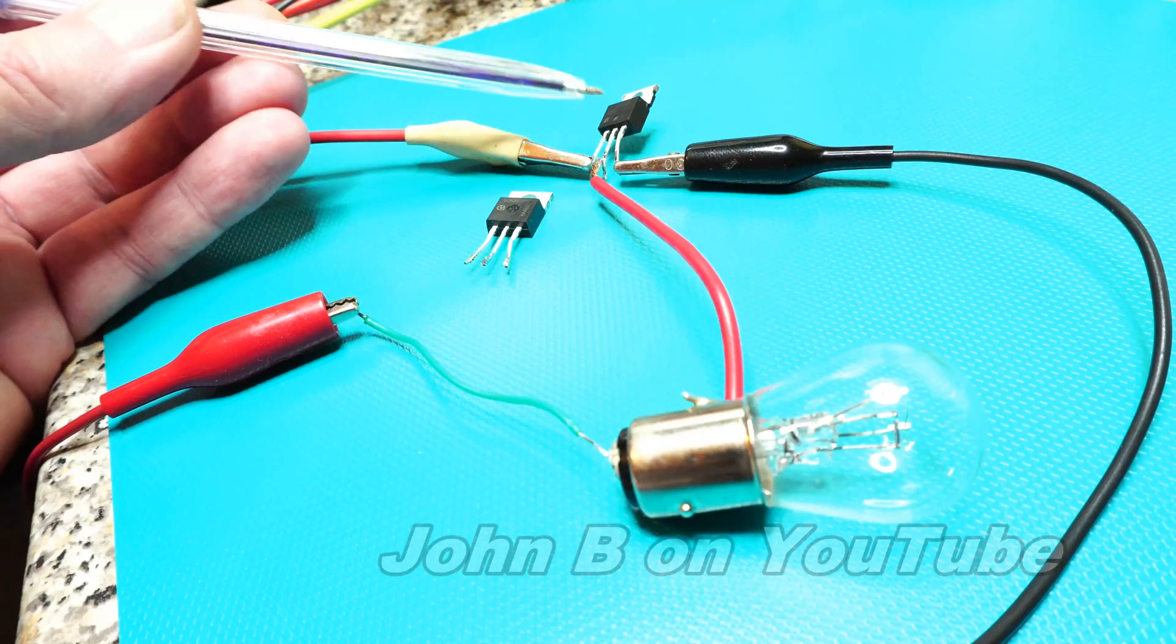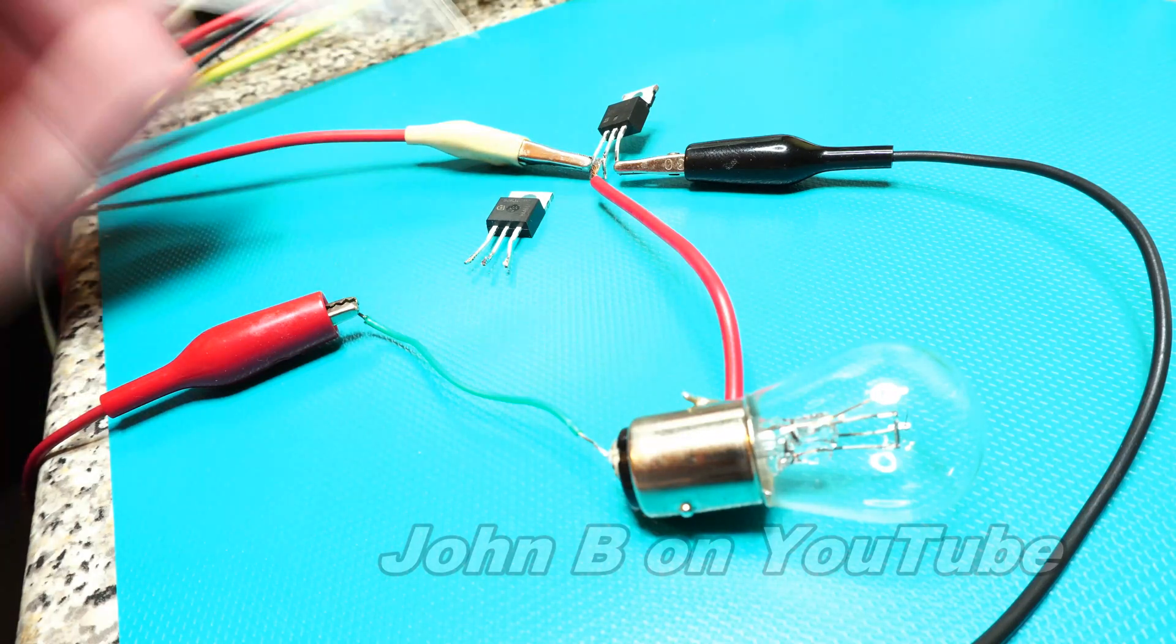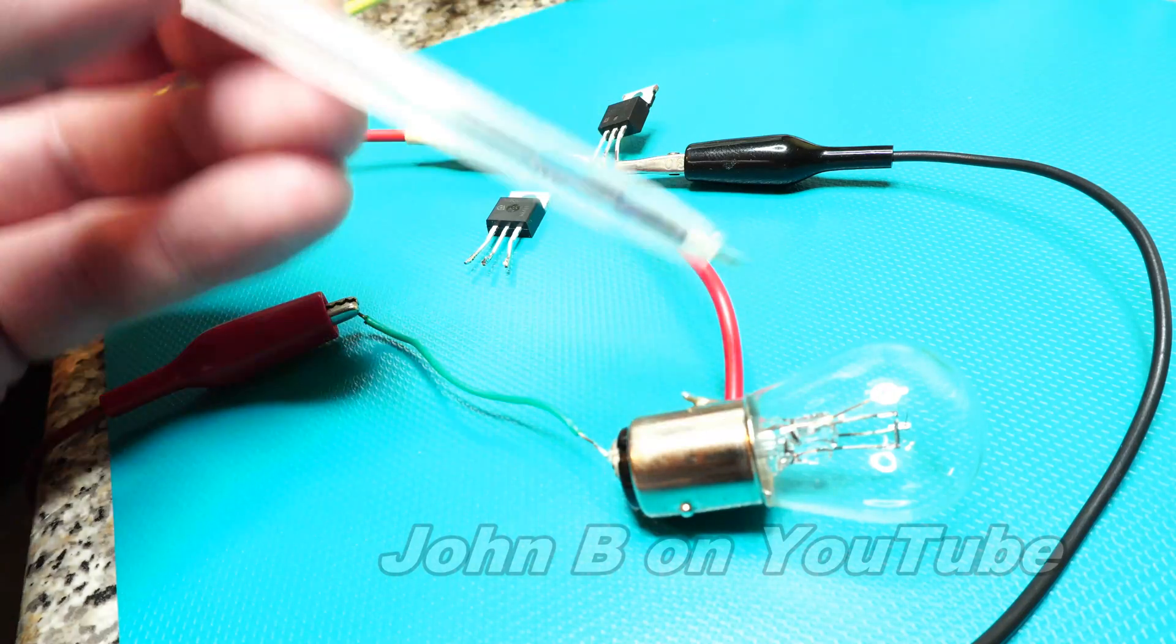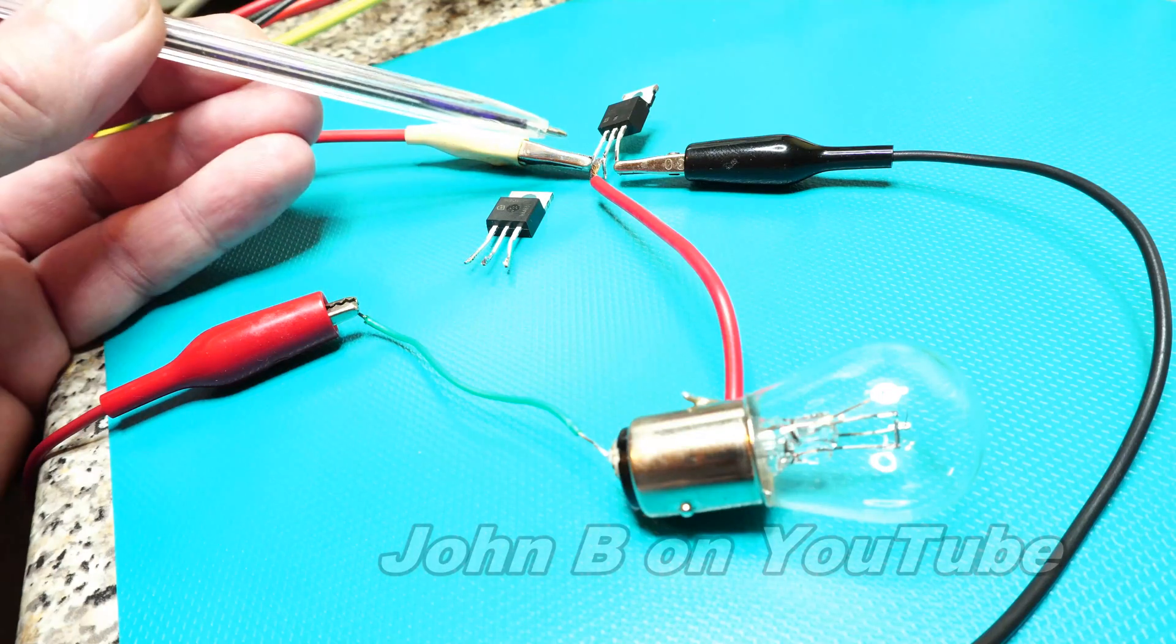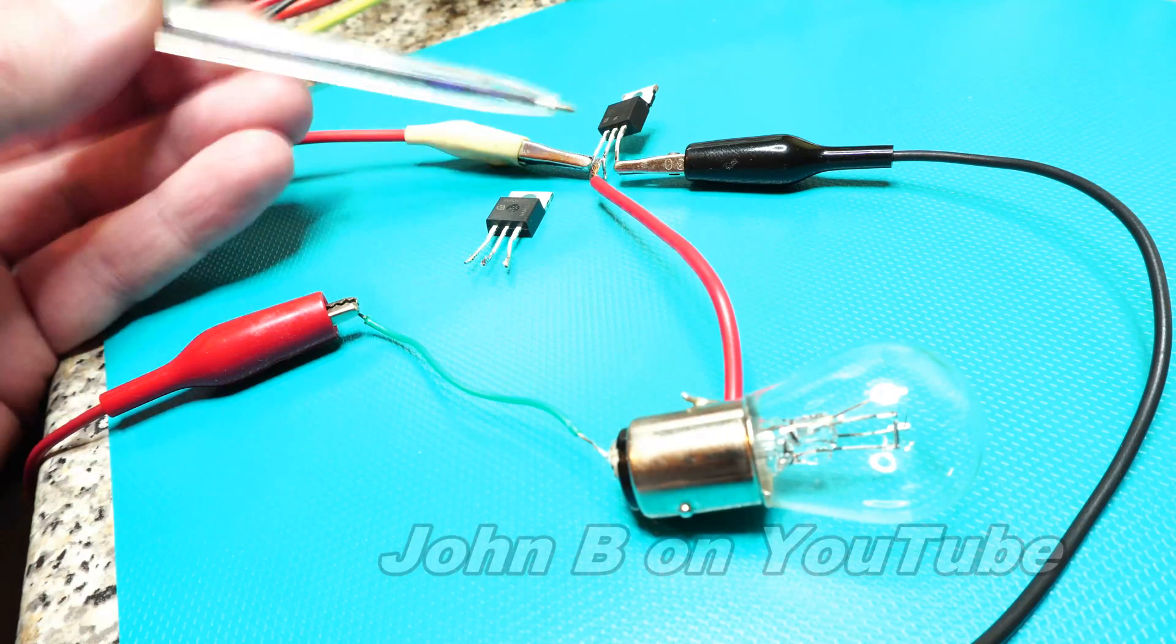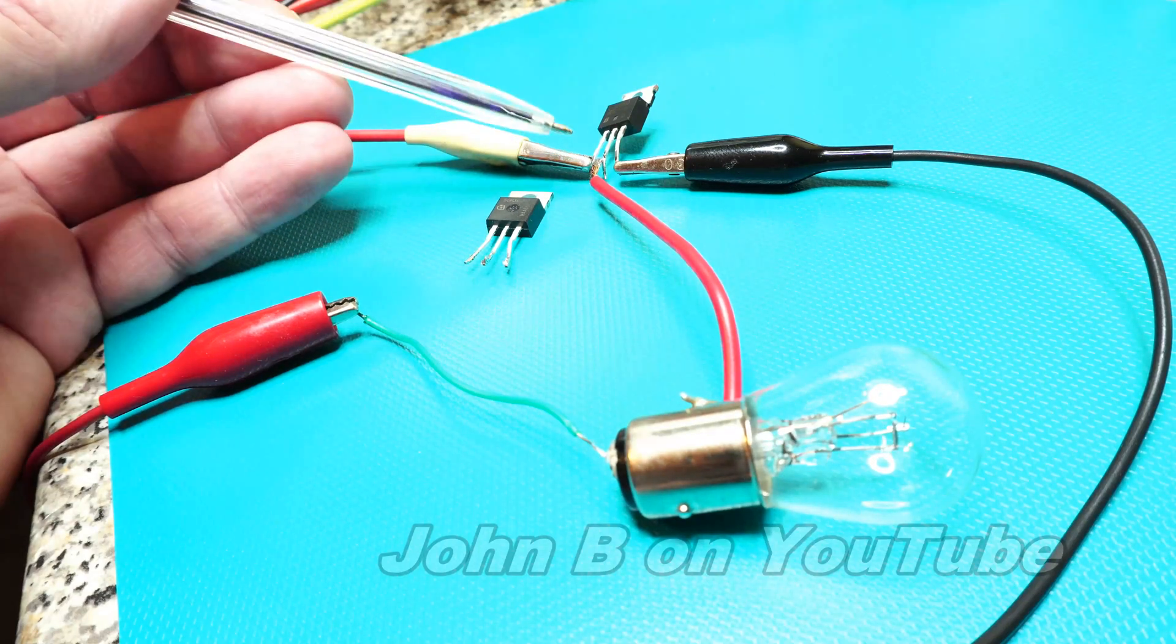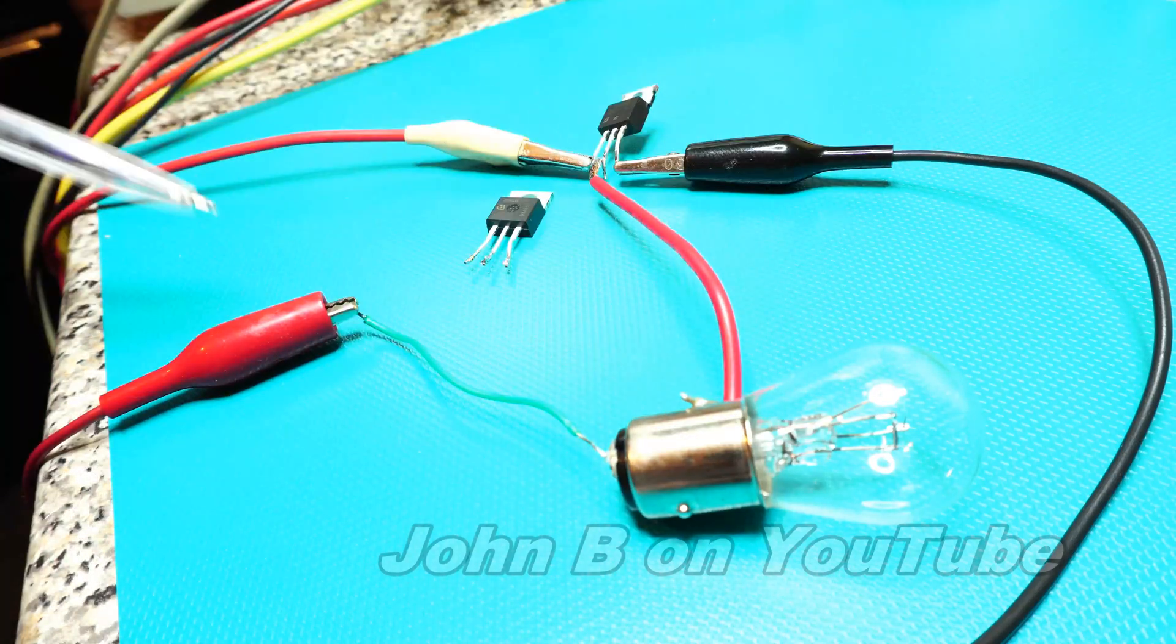So today I'm using the Vishay FET transistor I demonstrated last night in the video for selecting your gate resistor. That's wired up now to a 12 volt bulb and straight to my power supply. No gate resistor. My power supply pulls the gate down to ground so I don't need anything to discharge it down to source.